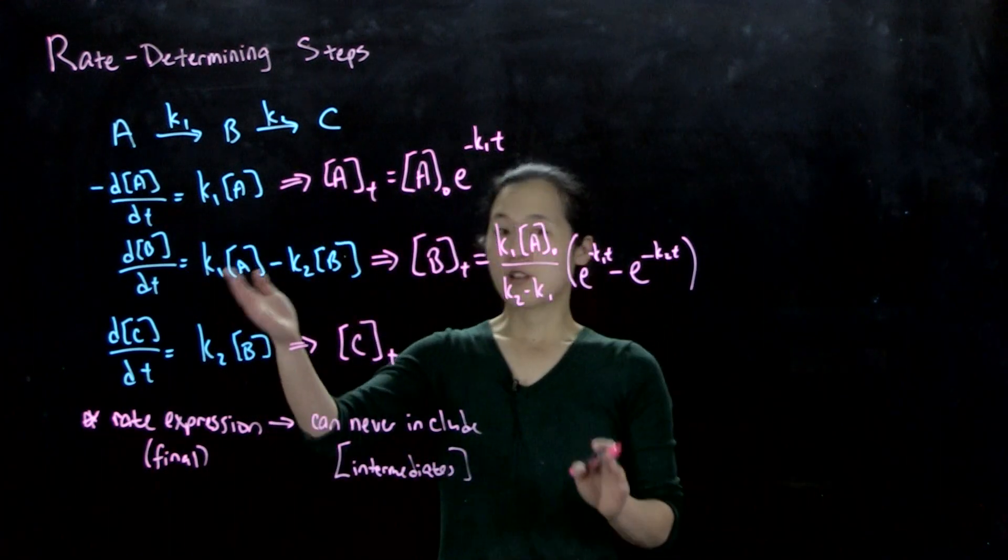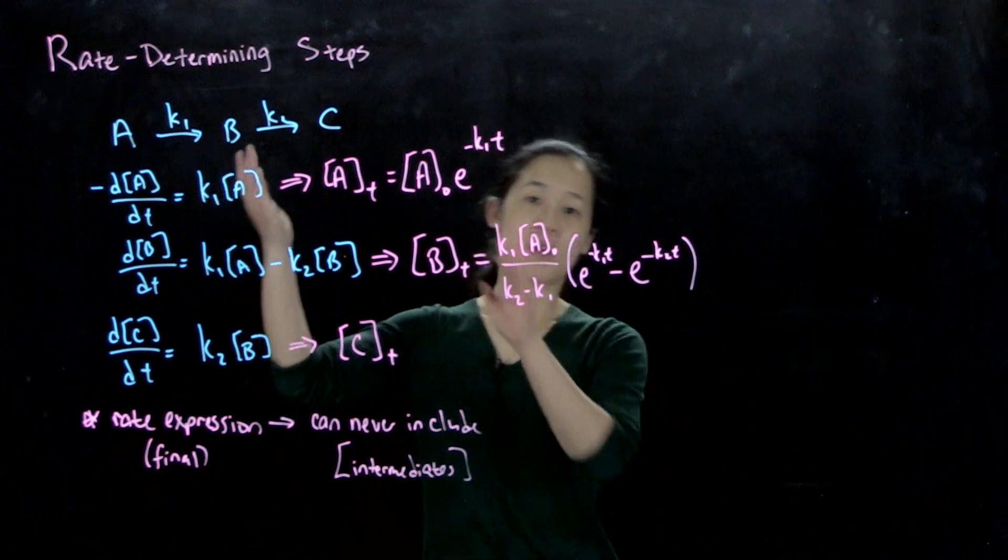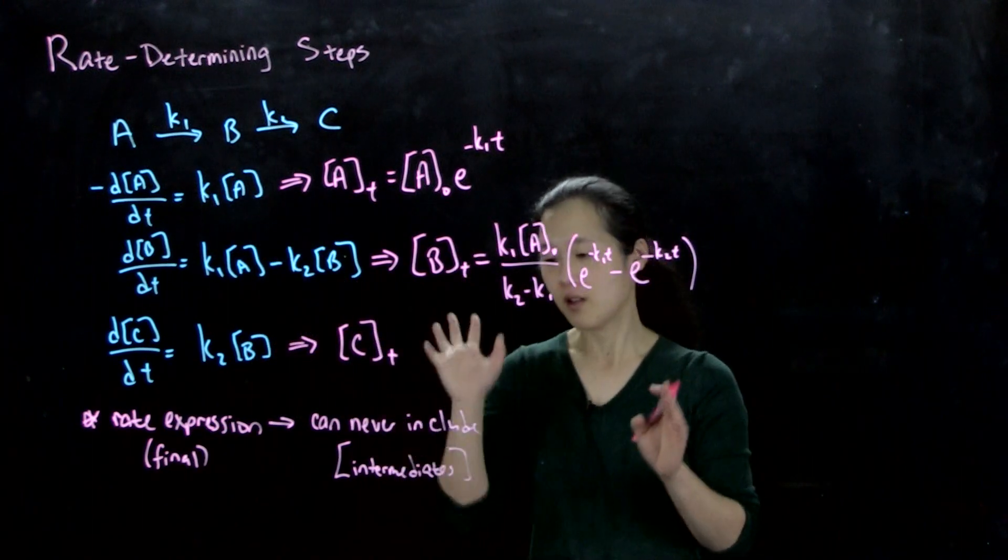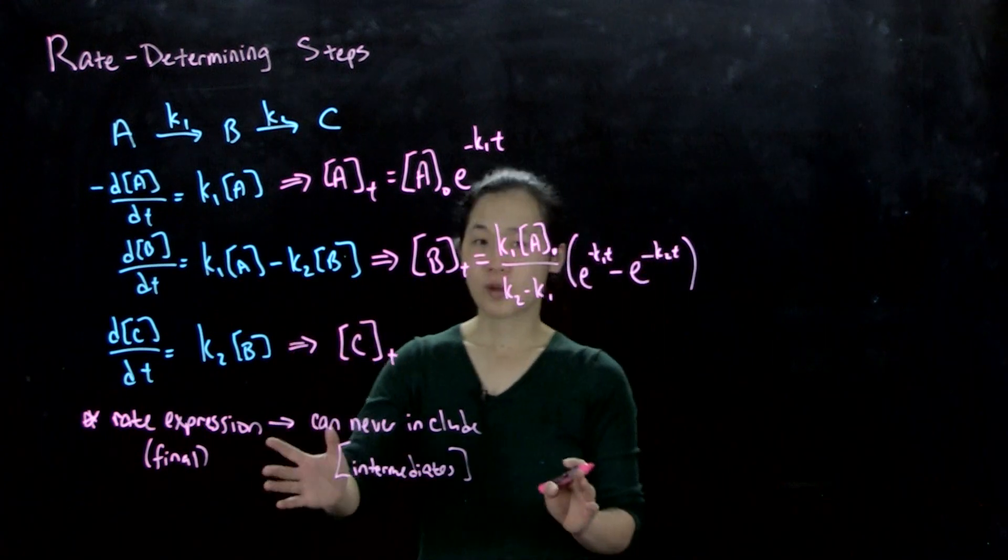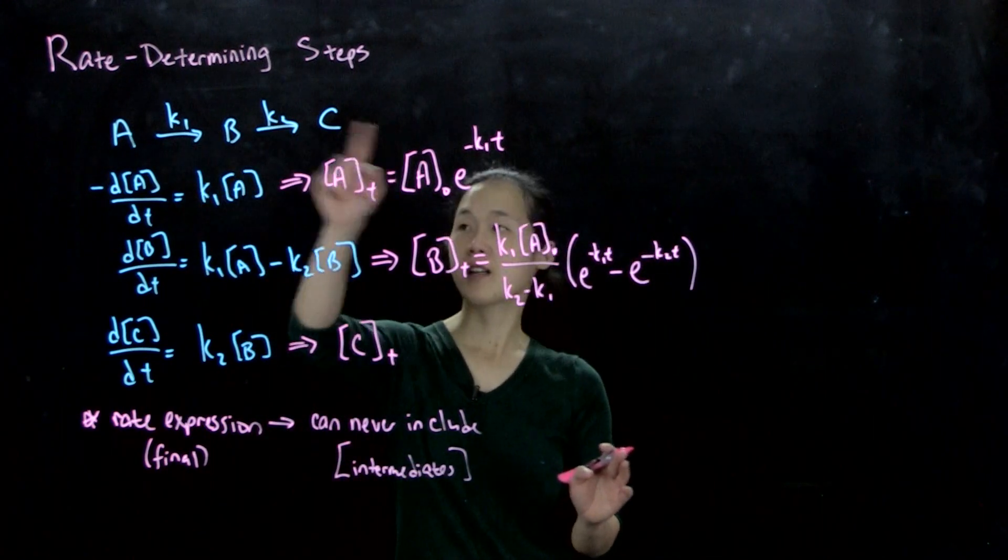Because in principle, your intermediates you should be able to solve for in terms of your reactants and your products. So you should only ever have rate expression, your final rate law, in terms of reactants and products, never intermediates.